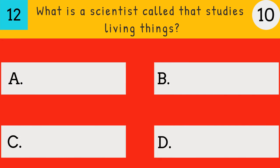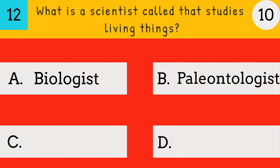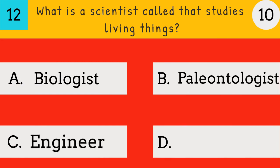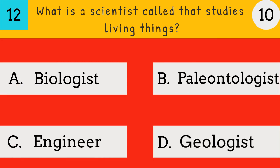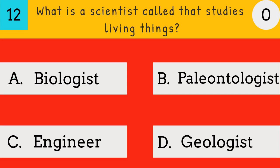What is a scientist called that studies living things? Biologist, Paleontologist, Engineer, Geologist. Answer: Biologist. The scientist who studies living things is called a Biologist.